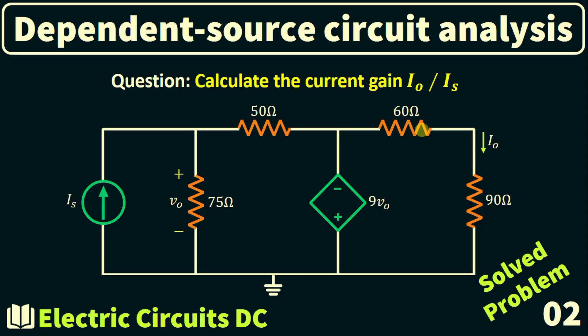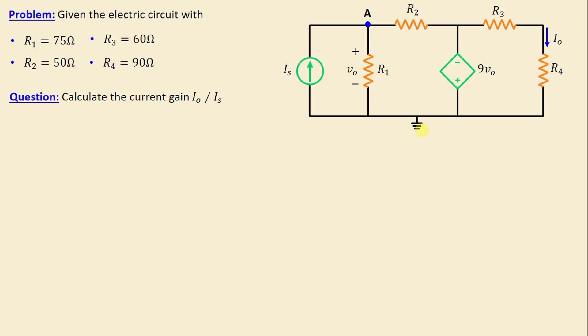Greetings, welcome to this new video about dependent source circuit analysis — problem number two. Let's consider this network consisting of four resistors labeled R1 through R4, along with one independent current source IS. Additionally, we can observe the presence of a dependent source, specifically a voltage controlled voltage source.